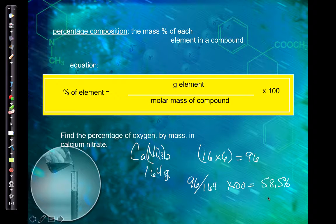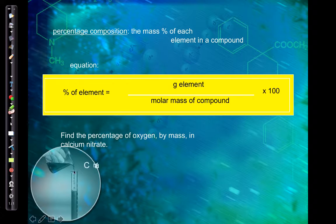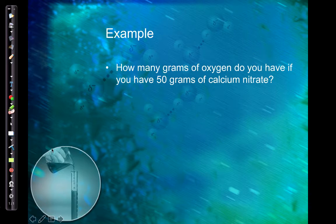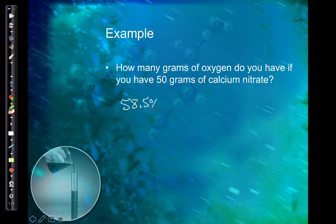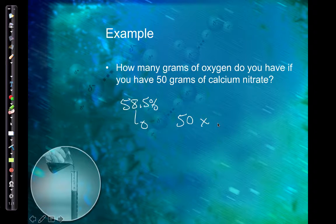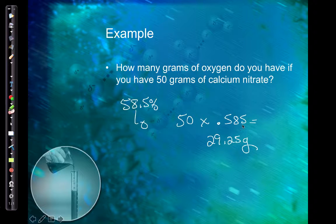If you have 50 grams of calcium nitrate, 58.5% of that is oxygen. Note: if given a volume like 2 liters, you cannot just multiply by 58.5% — it has to be a mass. So 50 multiplied by 0.585 gives 29.25 grams of oxygen. About 29 of the 50 grams is just oxygen.